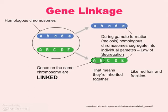But in the case of genes that are on the same chromosome — where they say they're linked — they tend to be inherited together, like red hair and freckles. That's the classic example. If you get the gene for red hair, since it is on the same chromosome as the gene for freckles, you're going to inherit that as well.